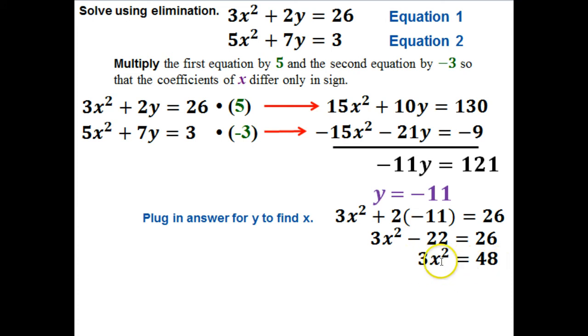Now I've still got to get my x all by itself, so I'm going to divide both sides by 3. I find out that x squared equals 16. If I take the square root of both sides, x would equal a positive and negative 4.